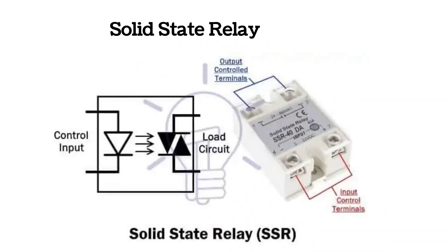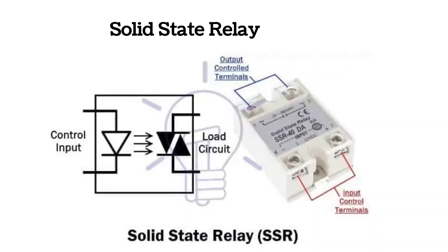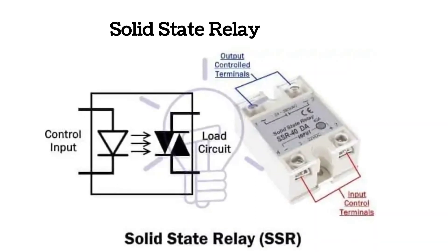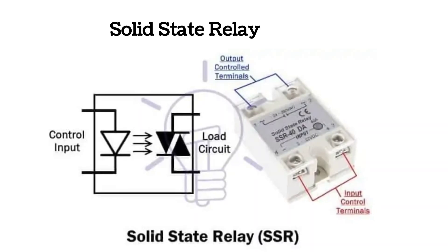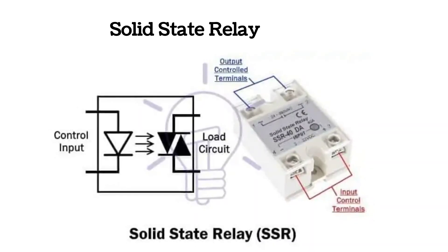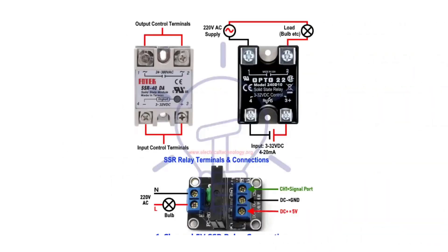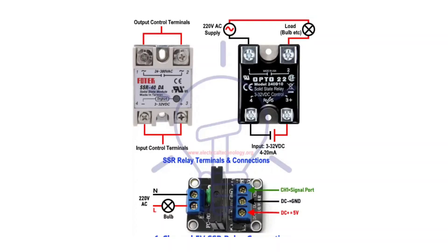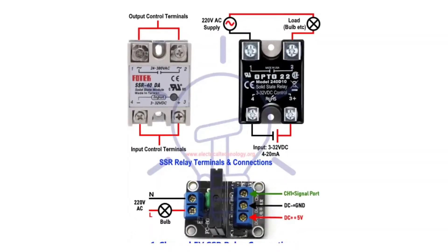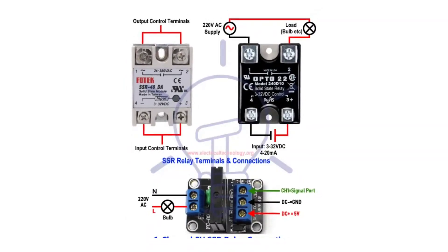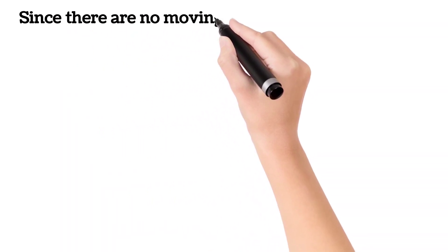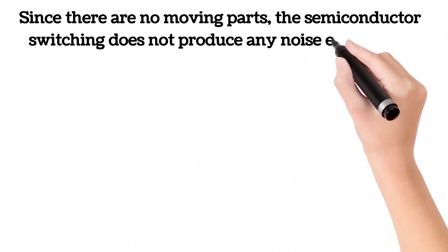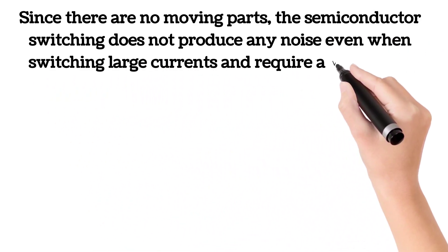Solid-state relays (SSR) are a type of relay that uses semiconductor material instead of an electromagnetic coil. It is the advanced, more complex version of the relay that optically couples the two circuits together. It uses a very low-power electrical signal to generate a light ray that triggers the switching of the output circuit. The SSR has the following parts: an optocoupler, output driver circuit, and semiconductor switching devices such as a thyristor, TRIAC, or MOSFET. The optocoupler provides physical isolation between the low- and high-power circuit and provides optical coupling between them. Since there are no moving parts, the semiconductor switching does not produce any noise even when switching large currents, and requires a very small signal to operate.